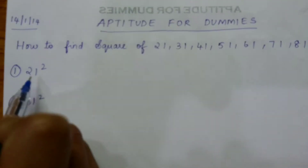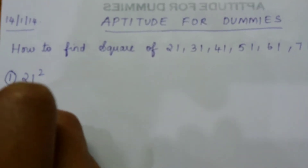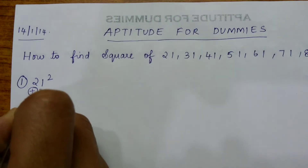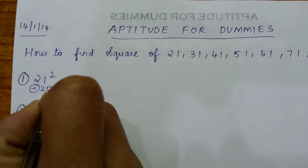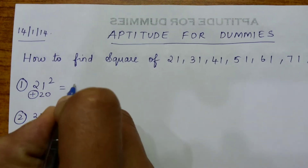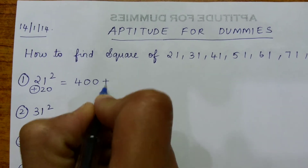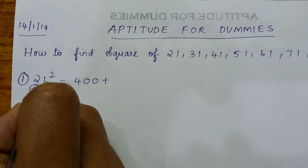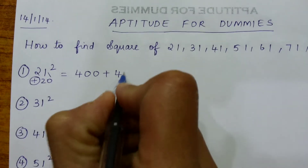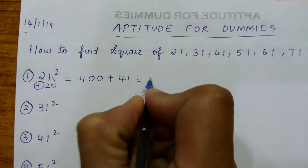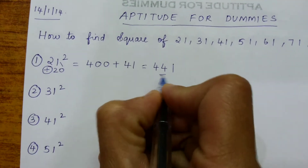First one: 21 square. It is one more than the perfect square number, that is 20. So we will write it as 20 square, which we all know is 400, plus 20 plus 21, that is 41, which equals 441. This is the square of 21.